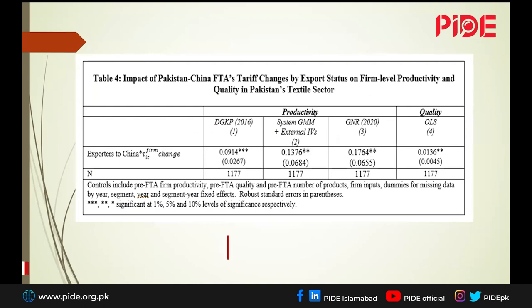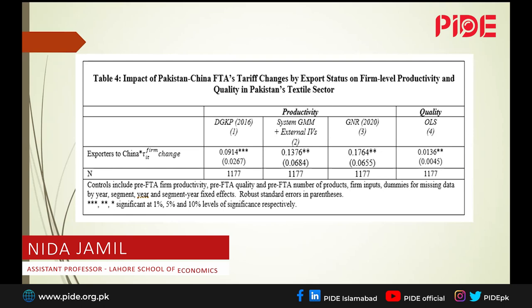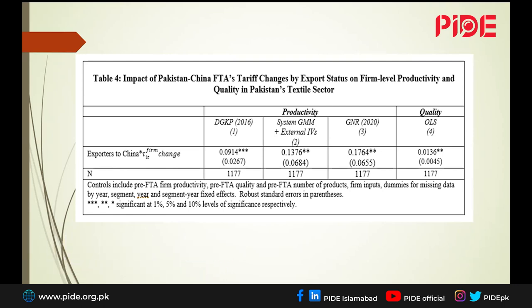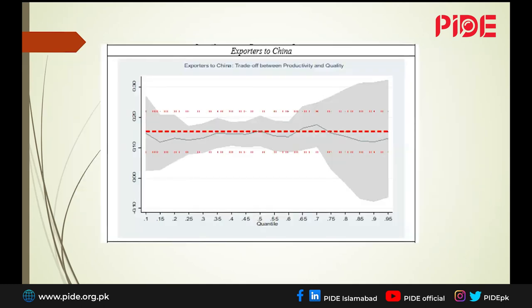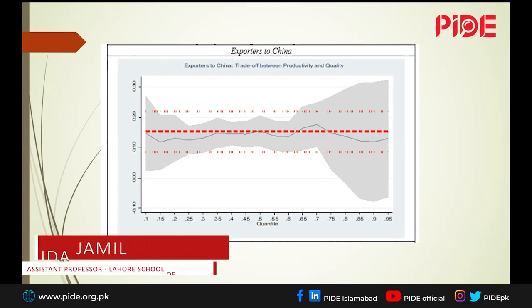Next, we look at the impact of the FTA specifically on firms exporting to China — not just the entire textile sector, but firms that specifically have market access within the Chinese market. Whichever methodology we use, productivity has gone up, but again not as much as compared to what we see for other countries. Similarly, quality has gone up, but not very impressive quality gains. Even for these firms exporting to China, productivity and quality are complements: the more productive they are, the better quality output they export to China.